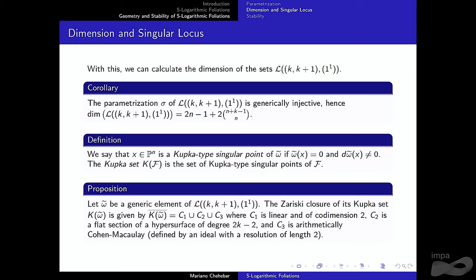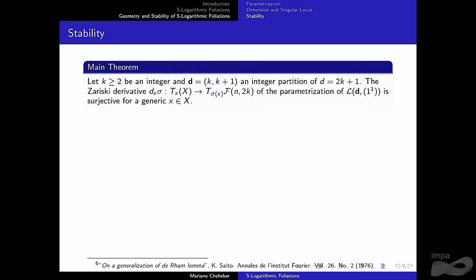This is a good overview of the geometry of S-logarithmic foliations. We have unirationality, dimension, and a description of the singular locus. The main theorem, as mentioned before, is that these sets are indeed irreducible components of the space of foliations.